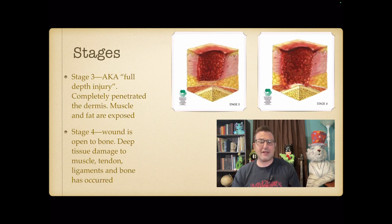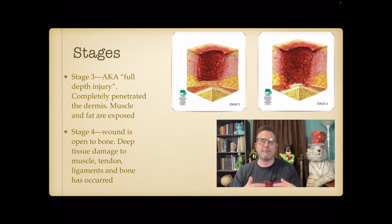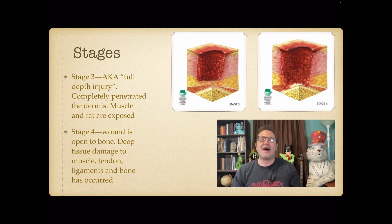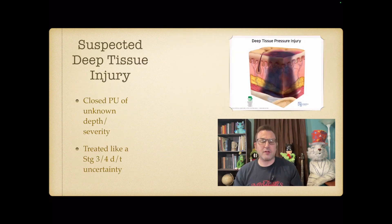Stage 3 is a full-depth injury — the wound has completely penetrated the dermis, and muscle and/or fat tissue is exposed to open air. Stage 4 means the wound is open to the bone. A trainer once told me: if you tap on the wound with a probe and it goes 'tink tink tink,' that's a stage 4. At stage 4, deep tissue damage has occurred — muscles, tendons, ligaments, and even bone can be damaged.